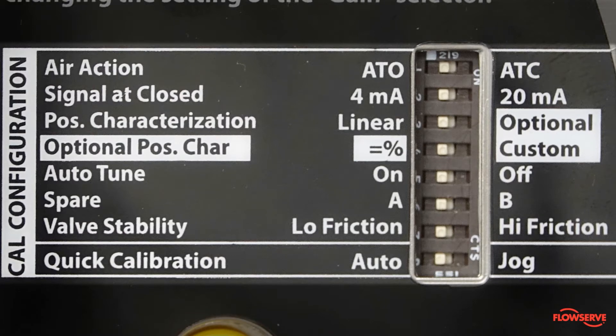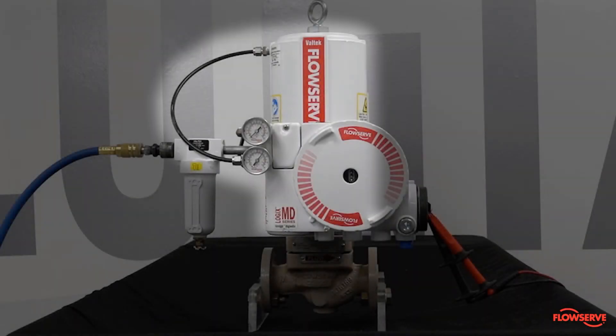Keep in mind that the dip switch settings tell the positioner to match the valve's mechanical configuration. For example, changing the air action dip switch does not change whether the valve is air to open or air to close. To change this, the physical configuration of the valve's spring and tubing must be changed.